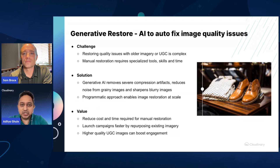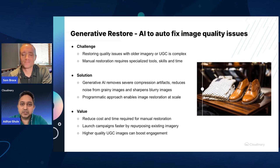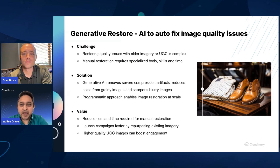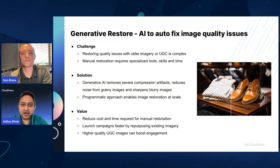Oftentimes the big challenge is that older imagery has severe compression artifacts due to repeated digital manipulation. They may even have issues like grainy or blurry pixels, and this renders them ineffective for production use. Especially for brands who want to visually engage their customers, they can't afford to have sub-quality imagery out there. It's the same with user-generated content — often super powerful in building customer trust and loyalty, but the imagery may not be of the highest quality and standards.